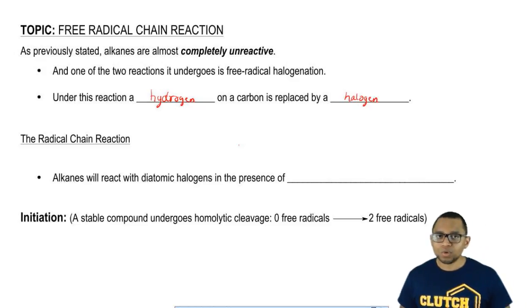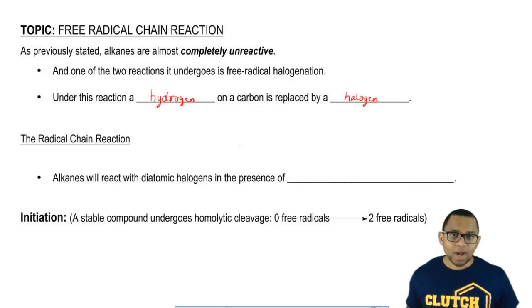The halogen that we usually use is either bromine or chlorine. Iodine is too slow and fluorine is way too reactive. If fluorine tried to form a bond, the compound would actually explode.